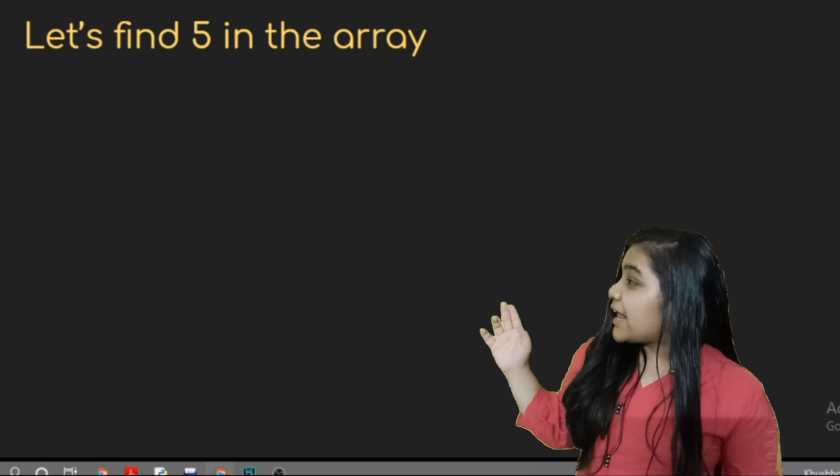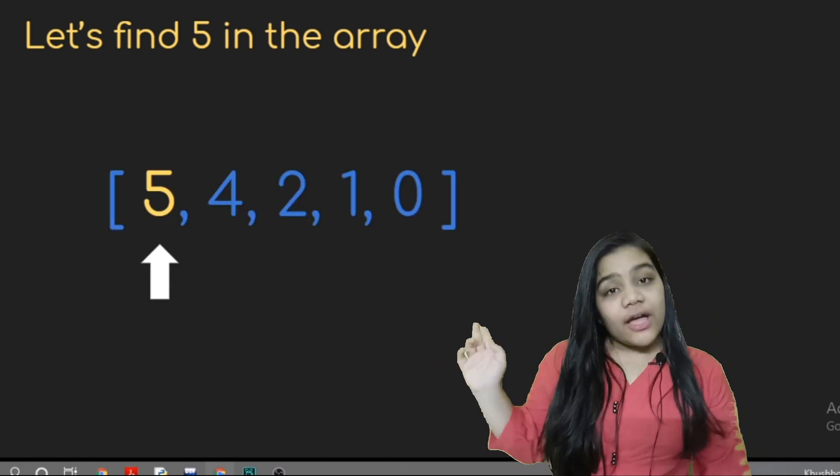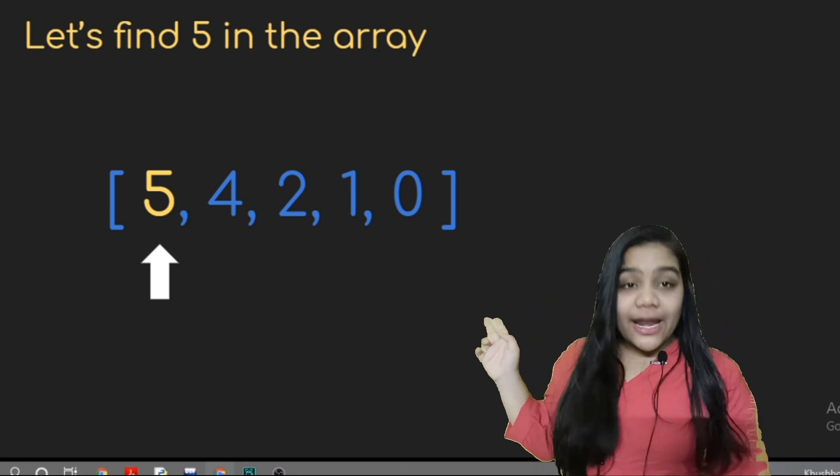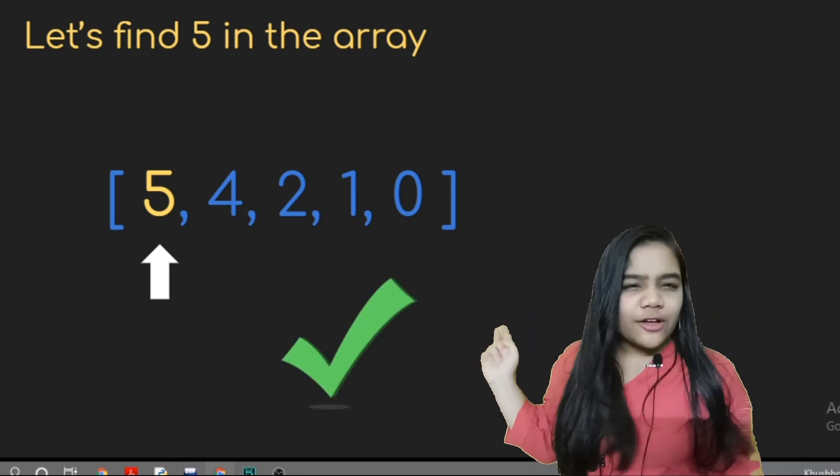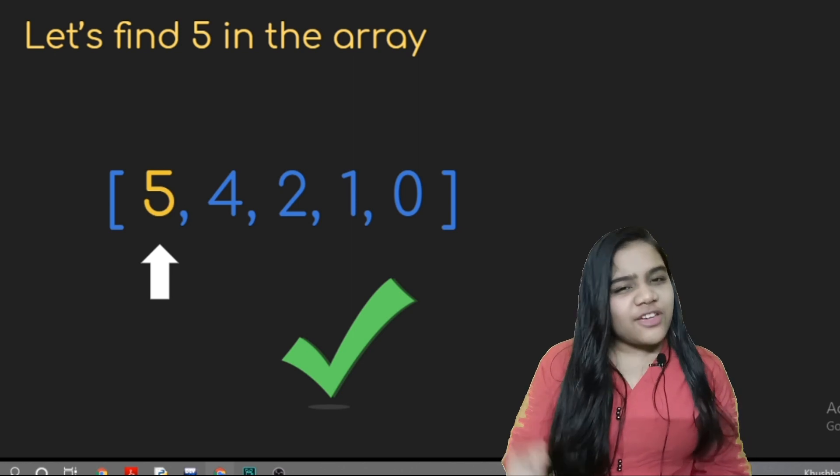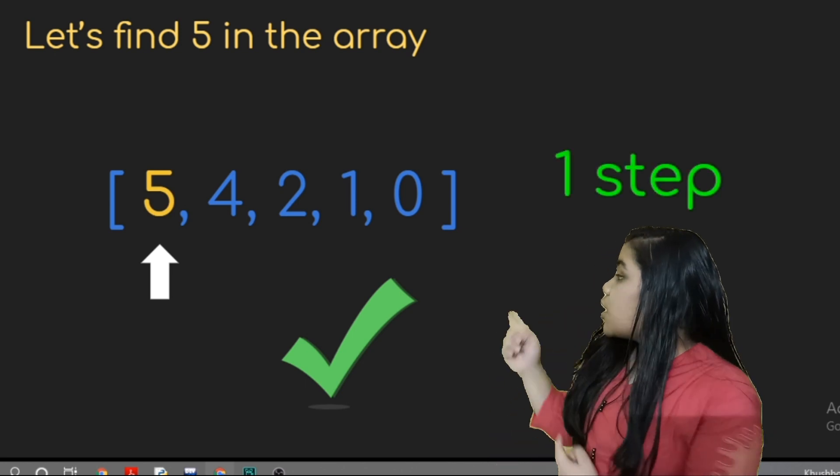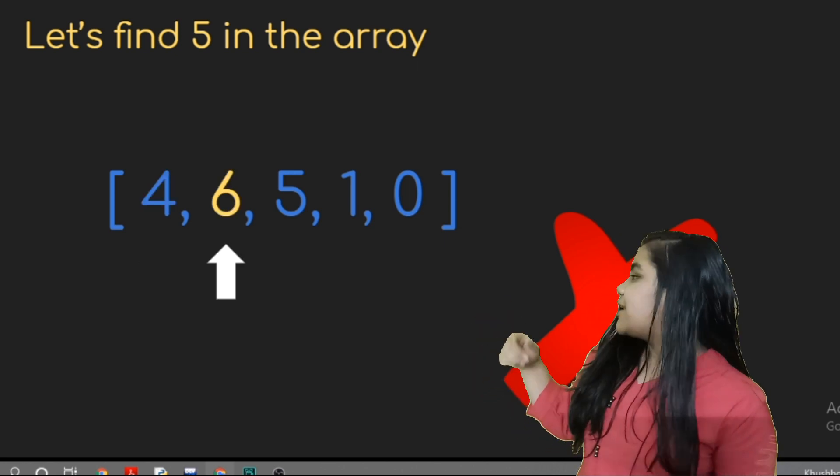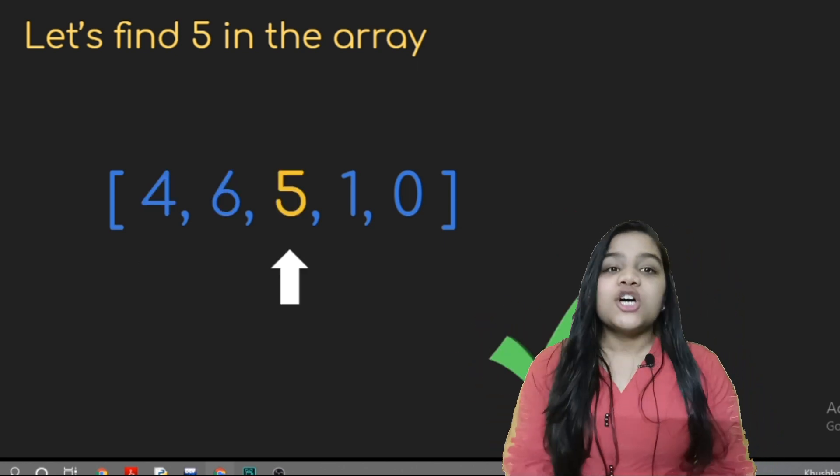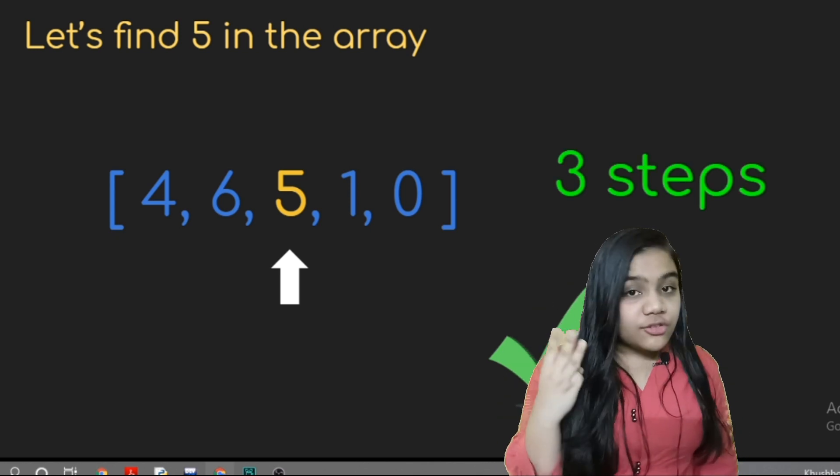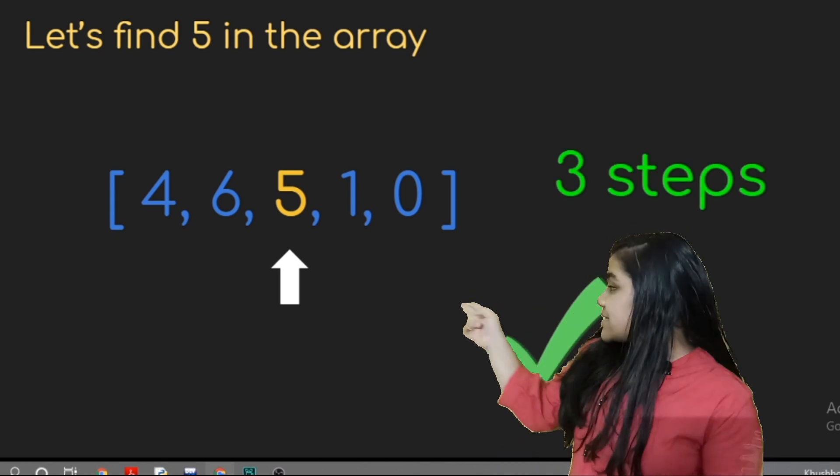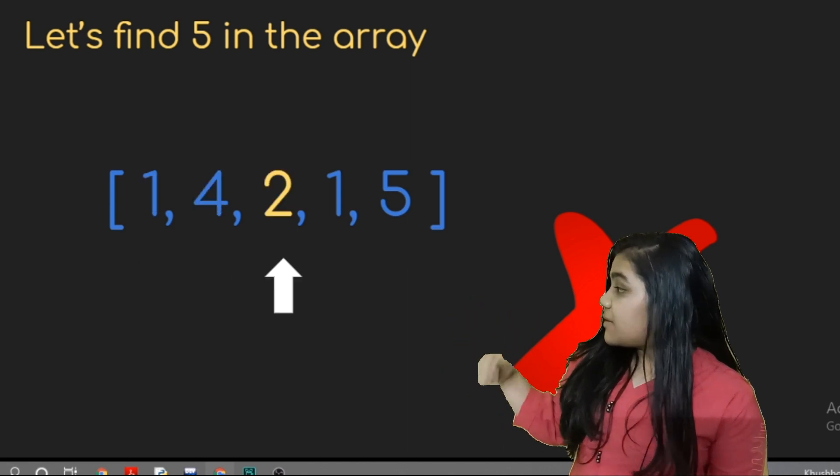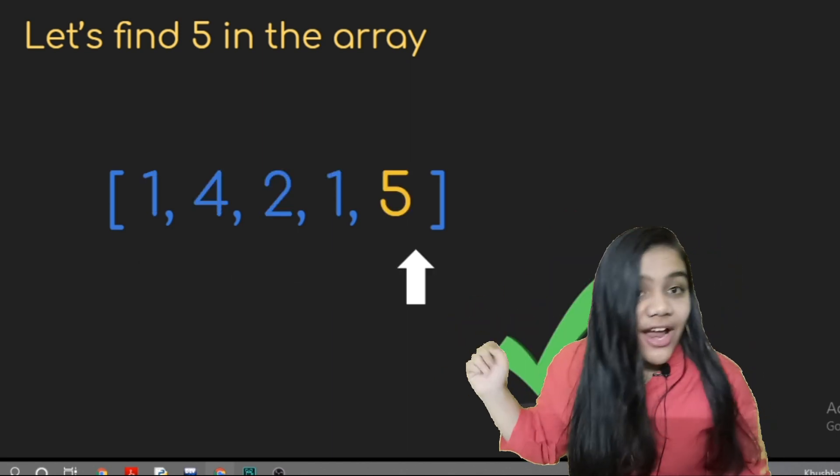So this is an array and we have to find 5 in this array. For this array we search the element at the 0 index and we got our 5. So we got our 5 in one step. Then for this array we search for element 0, element 1, element 2 and we got our 5. So it took 3 steps. Then for this array we search for element 0, element 1, element 2, element 3, then element 4 and we got our 5.